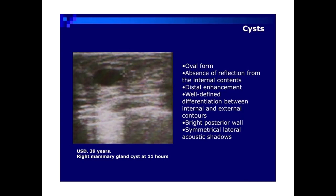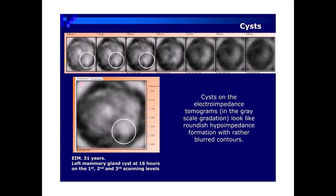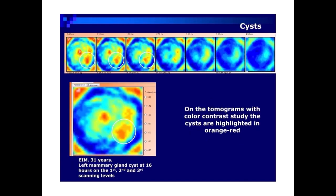Ultrasound example: 39 years, right mammary gland cyst at 11 hours. On electroimpedance tomograms in grayscale gradation, cysts look like roundish hypo-impedance formations with rather blurred contours. EIM example: 31 years, left mammary gland cyst at 16 hours, shown on the first, second, and third scanning levels.